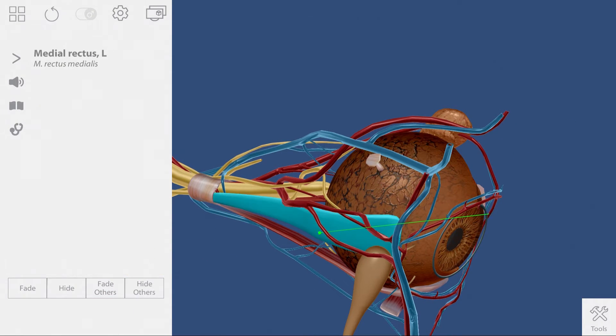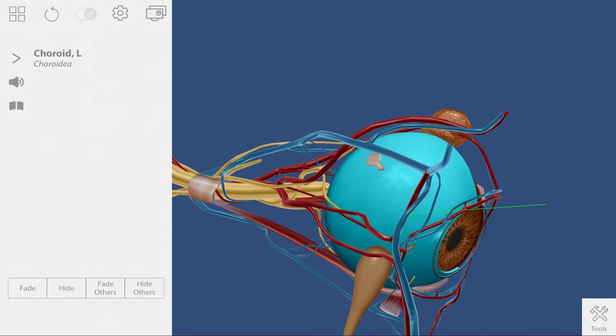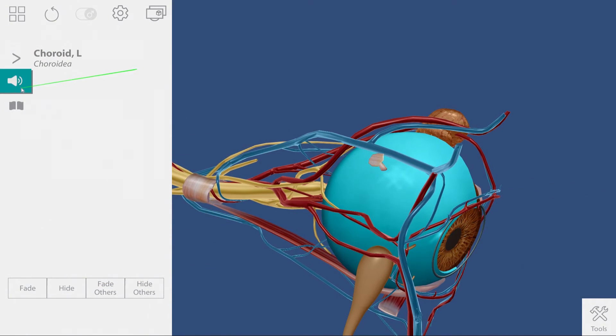One final tip: to help students with the pronunciations, select any structure and the audio icon that appears provides a pronunciation. Choroid.